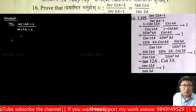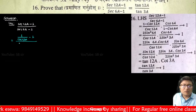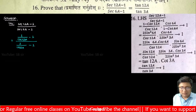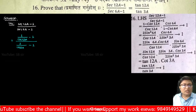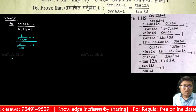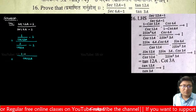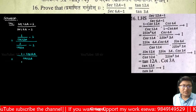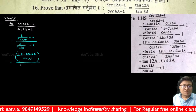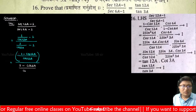We write 1 by cos 2a minus 1, over 1 by cos 6a minus 1. This simplifies to 1 minus cos 2a divided by cos 2a, all over 1 minus cos 6a divided by cos 6a.